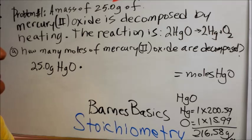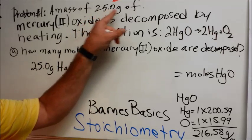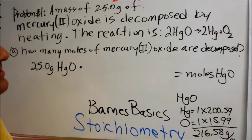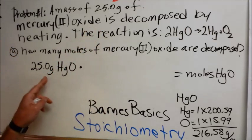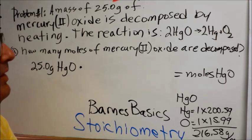And the zero is trailing a decimal, and it's to the right of a non-zero digit, so it's also significant. There are three sig figs in this problem, and that's how we will wind up reporting the answer.